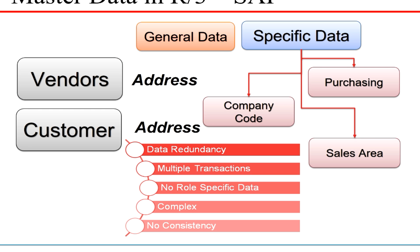Let's look at how master data in SAP R3 — the previous version before S4 was released — used to be organized. Master data used to be organized by vendors and customers, where all suppliers and customers were created with different addresses. Then you would create general data for these entities, and then specific data such as company code data for accounting, purchasing data for procurement, and sales area data for sales.